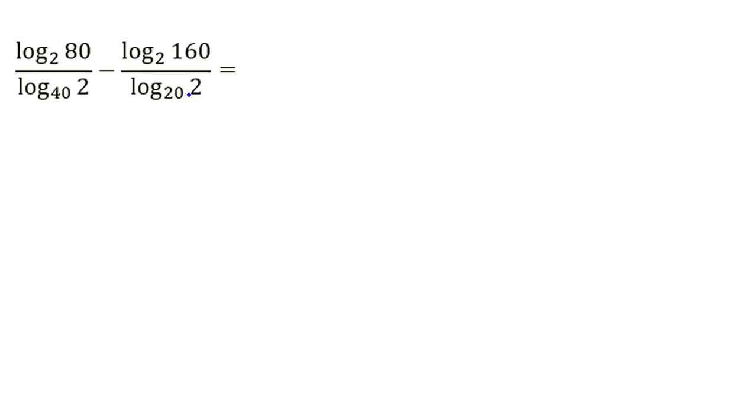Here, we have denominators. To get rid of these denominators, we apply this rule: 1 over log base 40 of 2 equals log base 2 of 40. You should switch A and B like this.